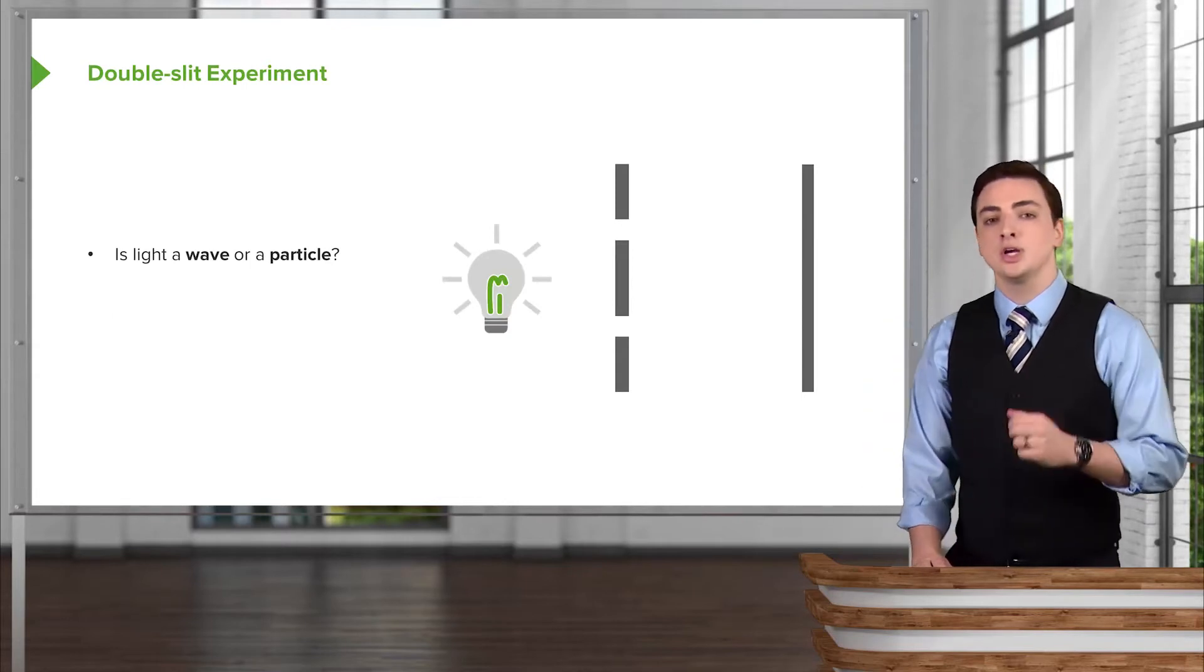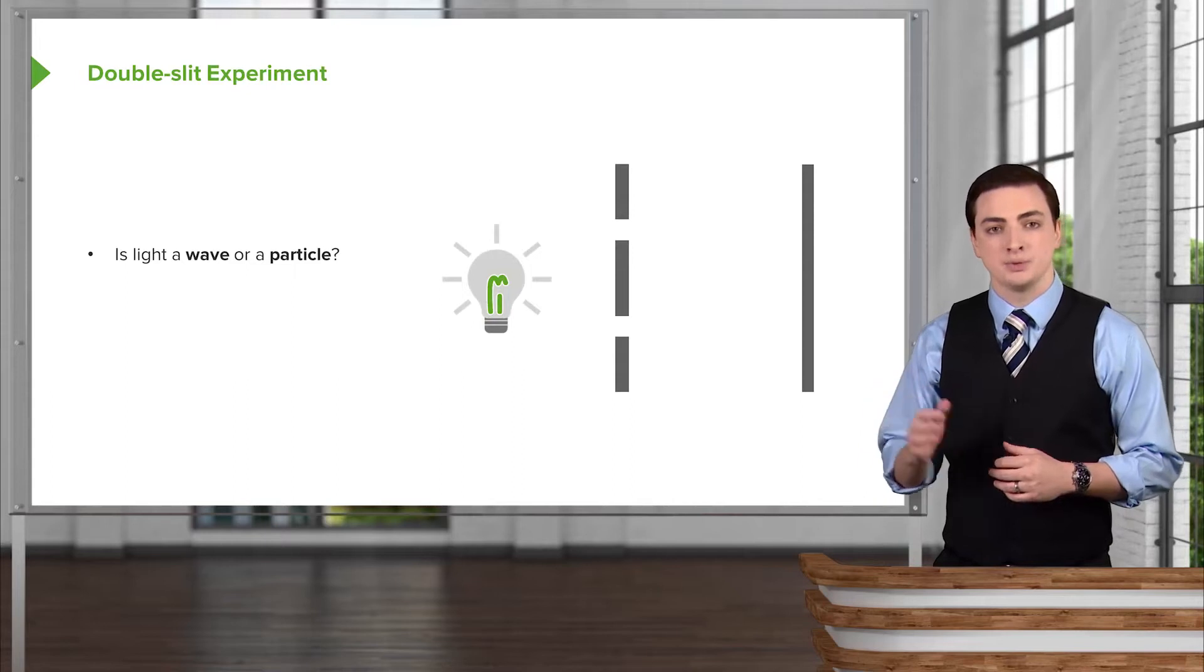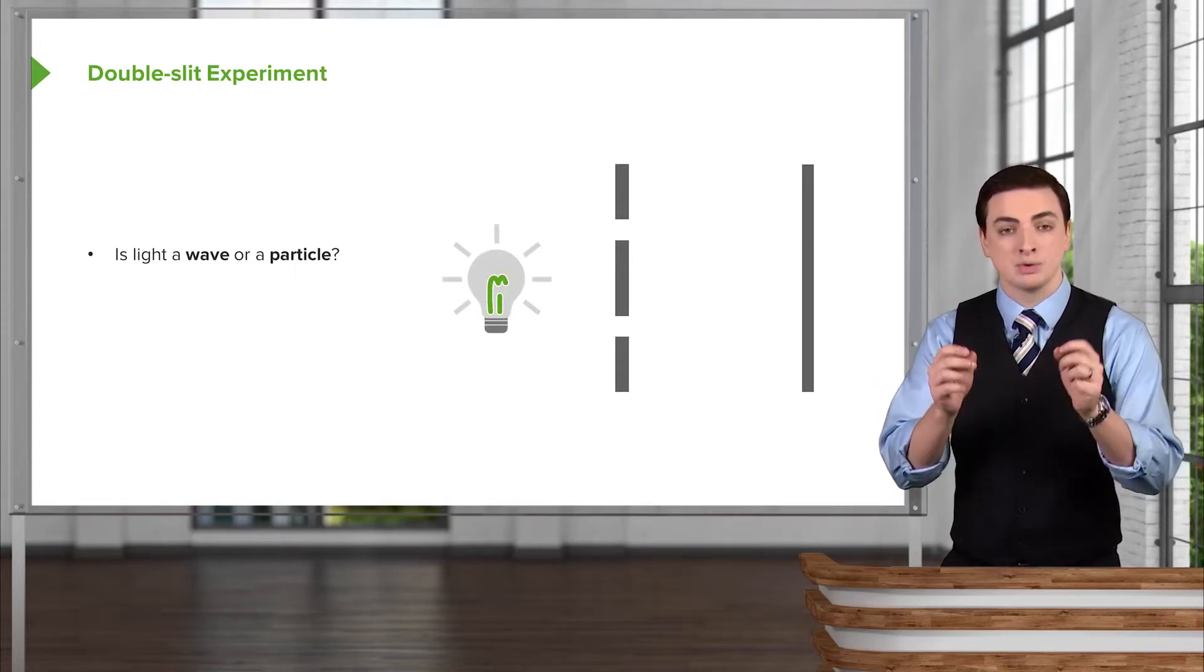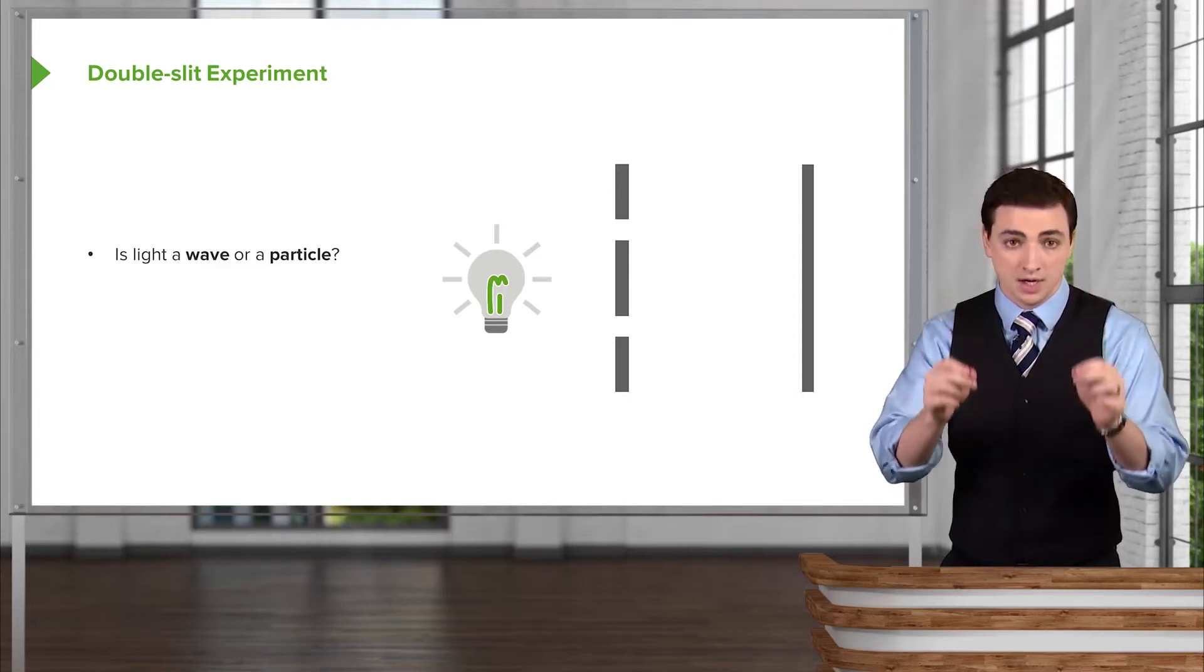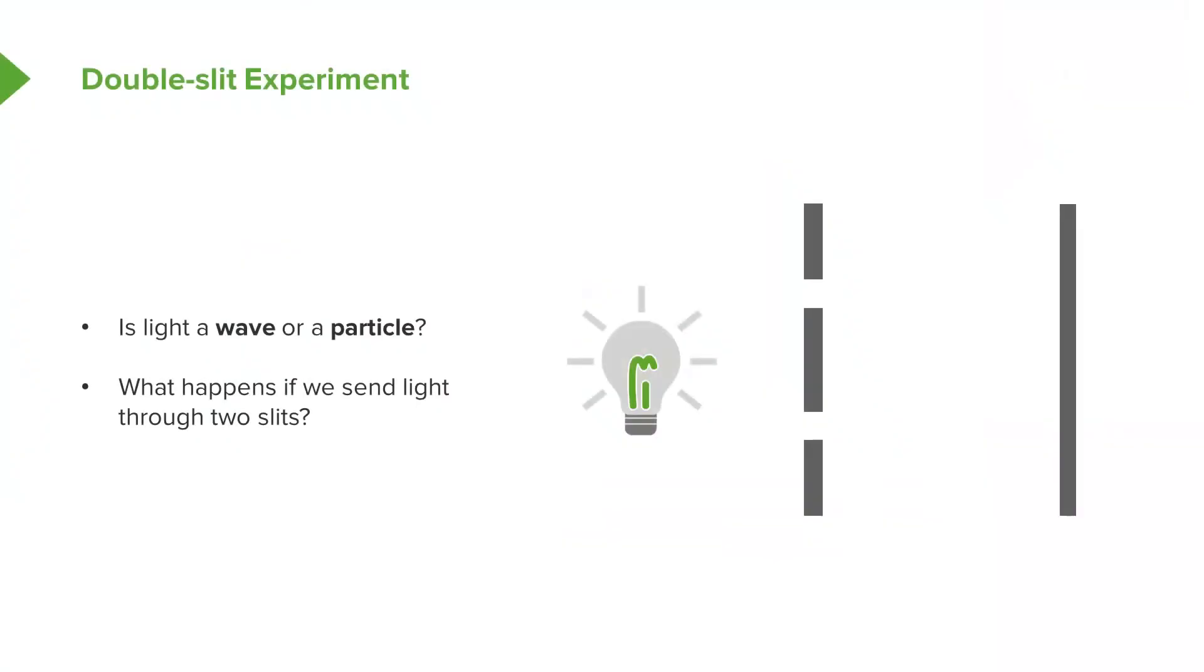Here's what he did. He took two screens like you see here, one on the left, one on the right, and in one of them he cut two very small holes. We often call this the double slit experiment because he cut two very small holes in this first screen. Then he asked what would happen if I sent light through these two holes and looked at what happened when it impacted the other screen, the screen on the far right here. He wanted to deduce whether light was a wave or a particle by sending the light through these two slits.